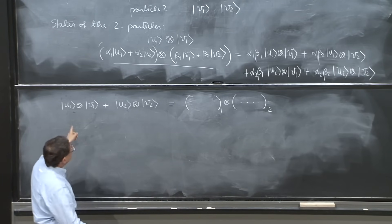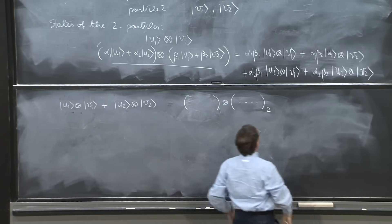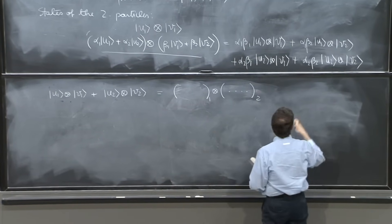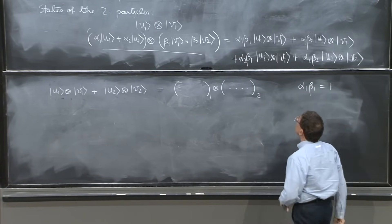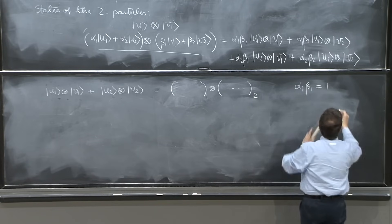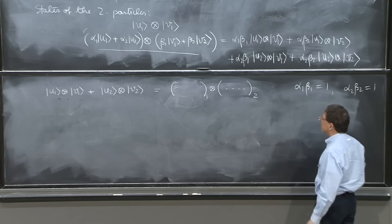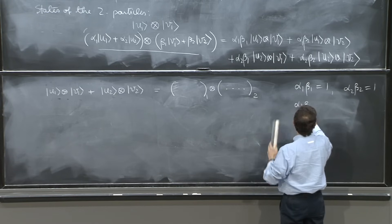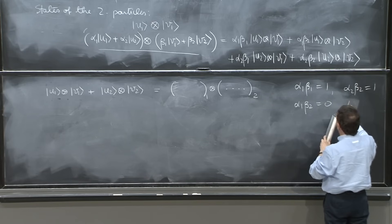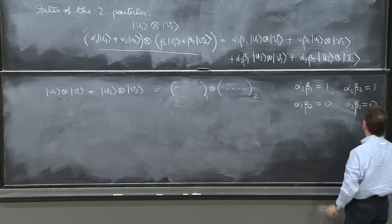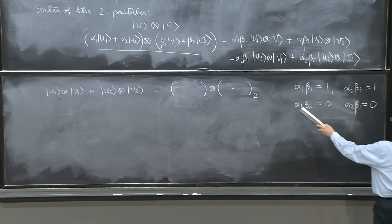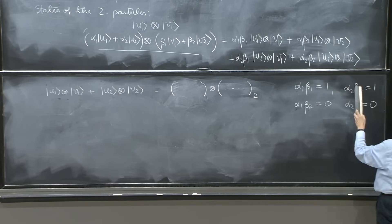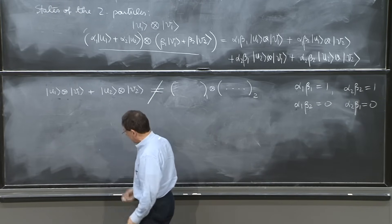So can I do that? Well, I can compare these two terms with those and I conclude that alpha 1 beta 1 must be 1. Alpha 2 beta 2 must be also 1. But no cross products exist, so alpha 1 beta 2 must be 0 and alpha 2 beta 1 must be 0. And that's a problem because either alpha 1 is 0, which is inconsistent, or beta 2 is 0, which is inconsistent with that. So no, this state is unfactorizable.